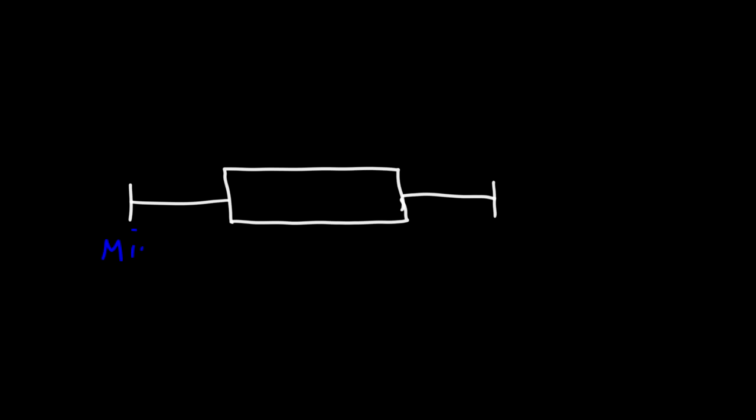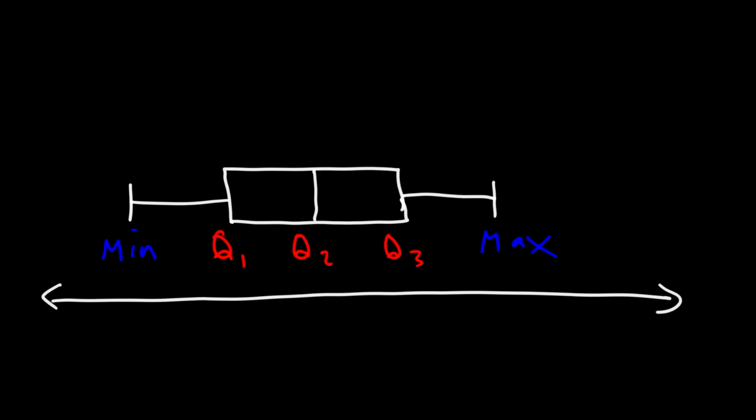In this video we're going to talk about how to make box and whisker plots. You need to be able to identify five key data points in your data set. The first two are very straightforward: the minimum and the maximum. The other three data points are the first quartile, the second quartile, and the third quartile. Once you have those, you can plot them on a number line and then draw the box and whisker plot around that.